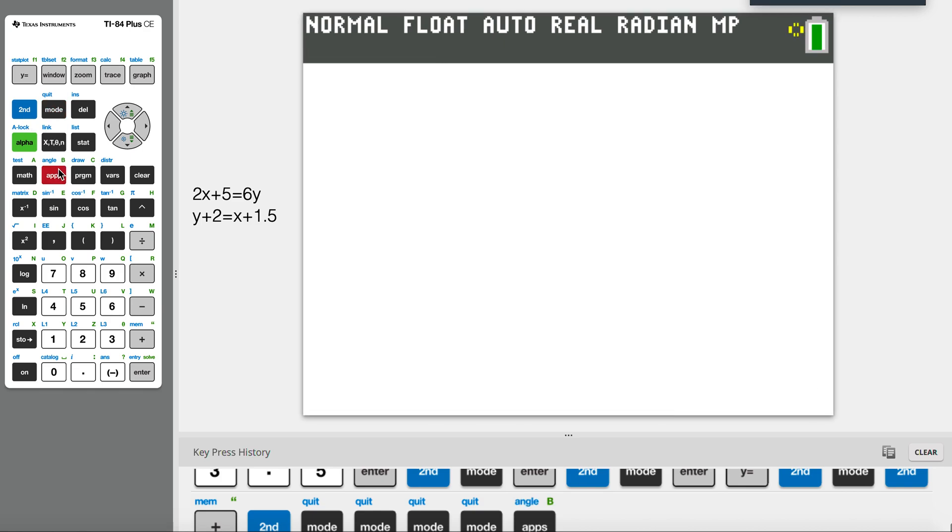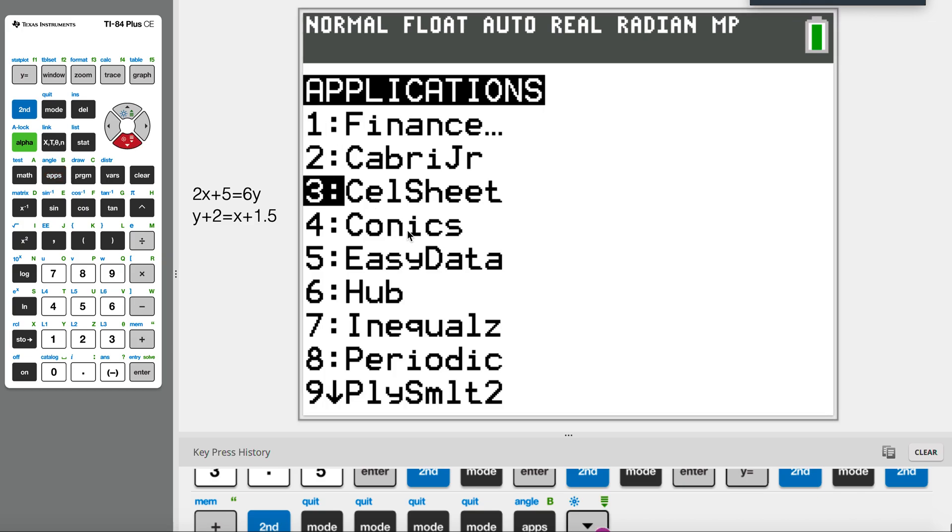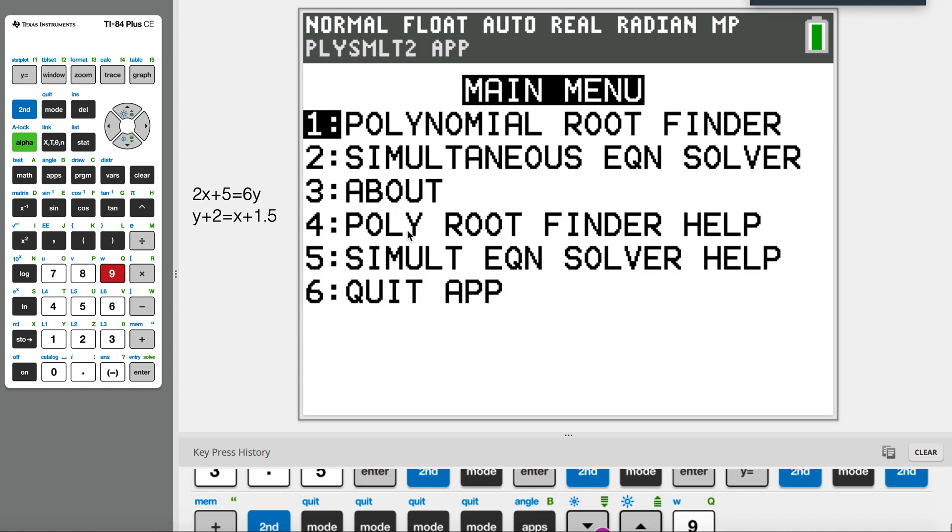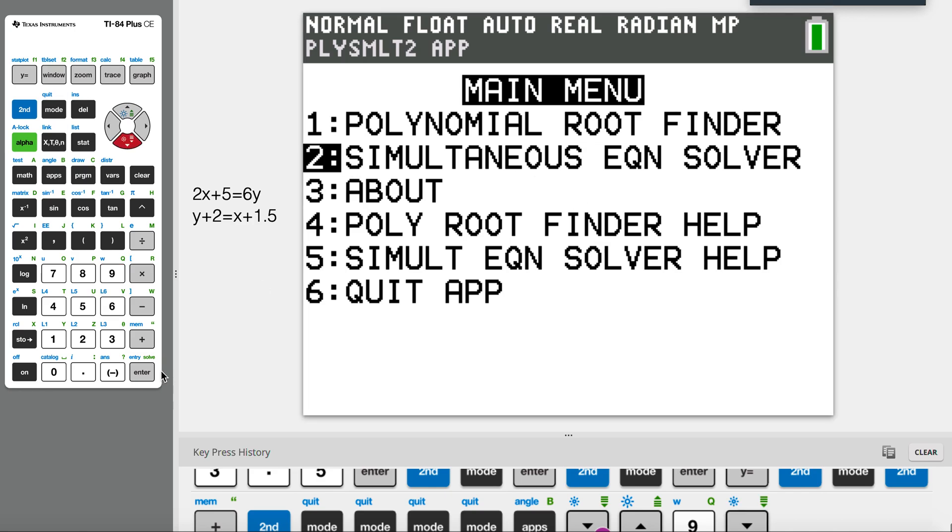So what you do is go to applications. In applications you can see there are many functions we're going to be talking about later in our course. For now we just have to go to number nine. In number nine you can see we have five functions altogether, and you see there's actually an official simultaneous equation solver. So you go to two and do enter.